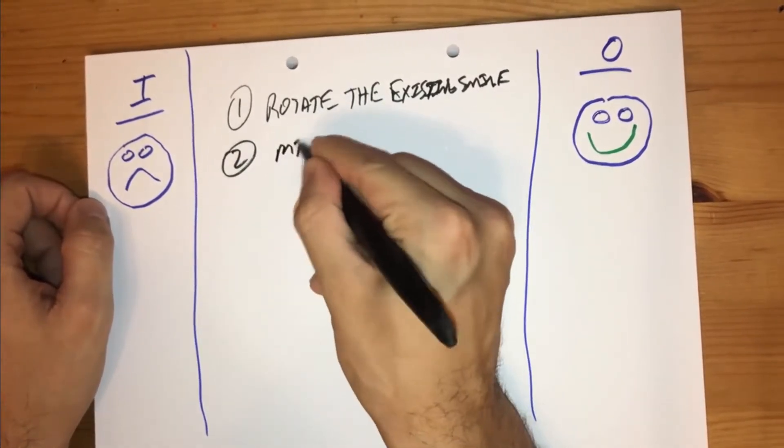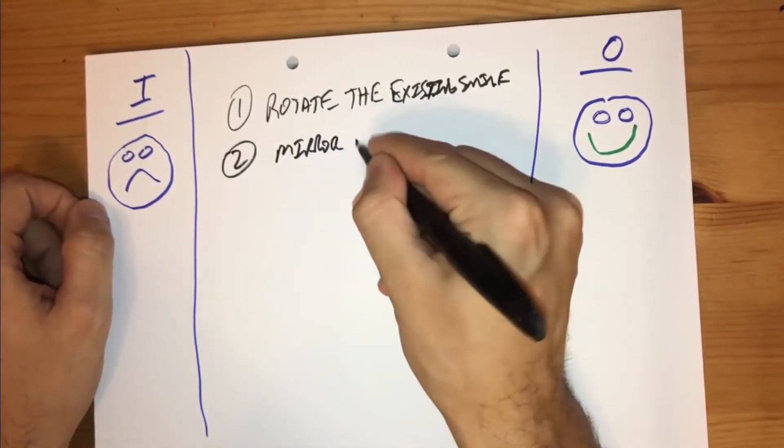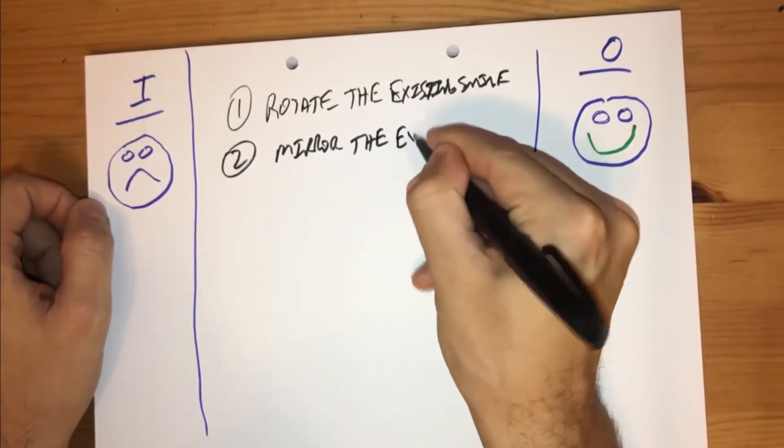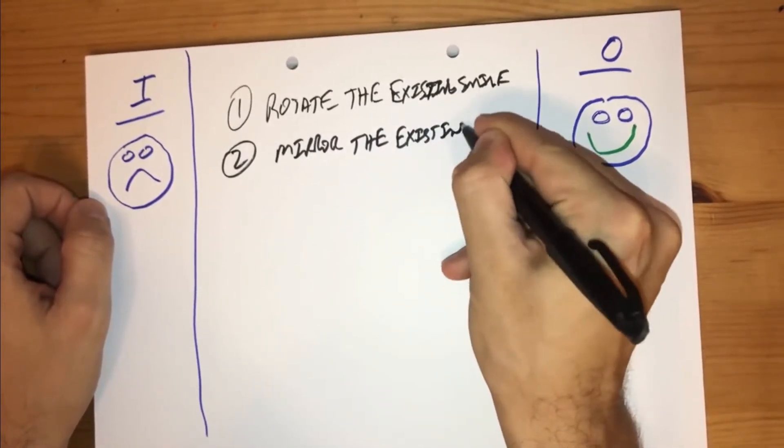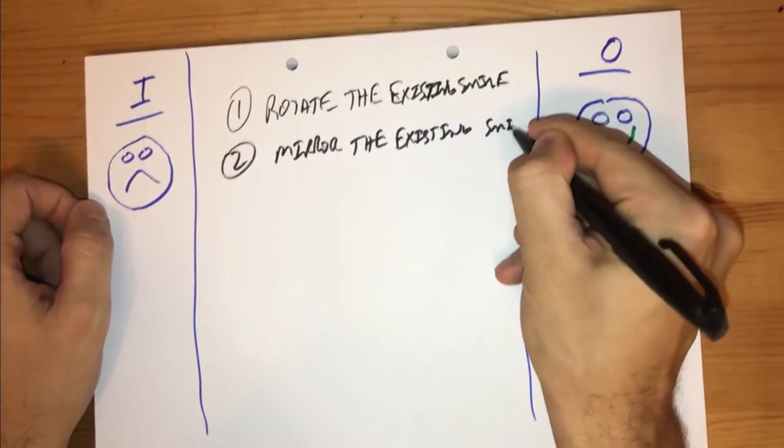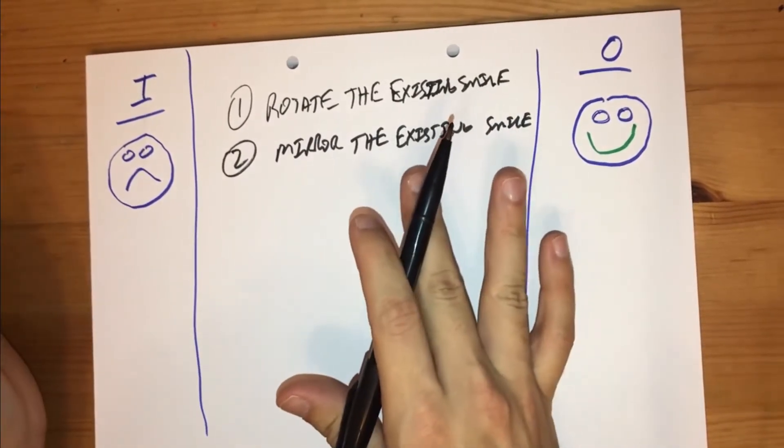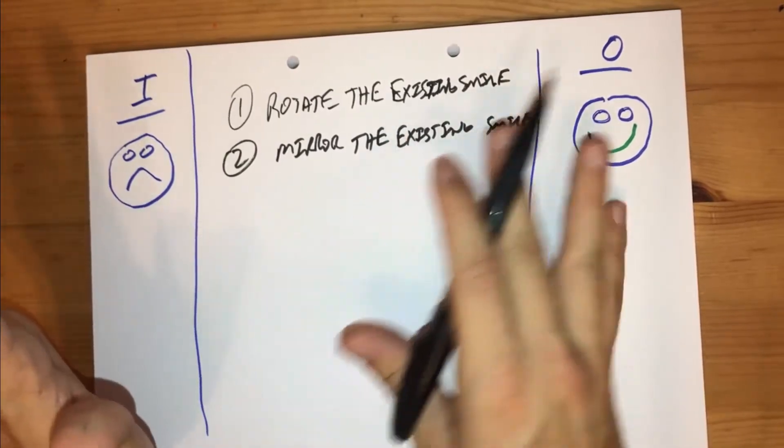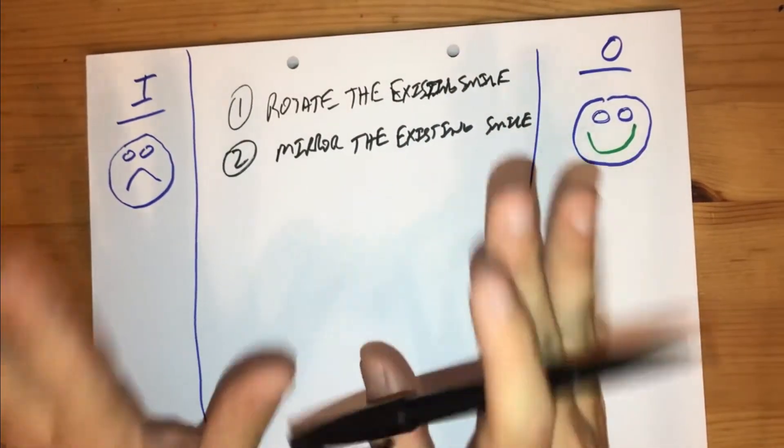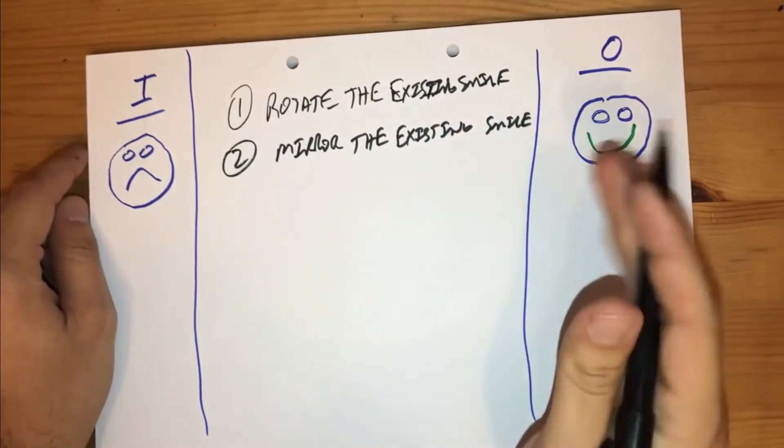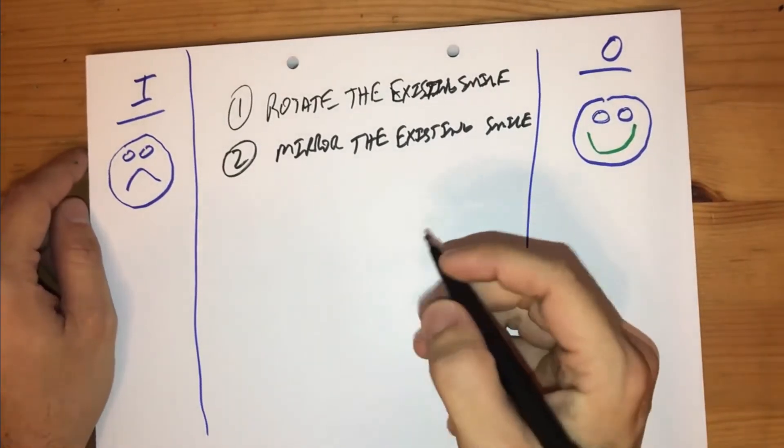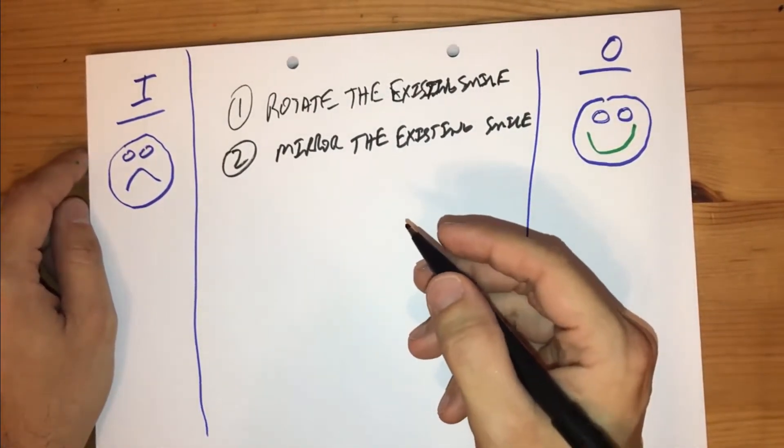Another one would be mirror the existing smile. And again, this is another very valid method. We don't specify anything other than it needs to smile. Again, this problem is meant to be very simple for you so that you're not spending a whole lot of time unnecessarily on not learning the basics.